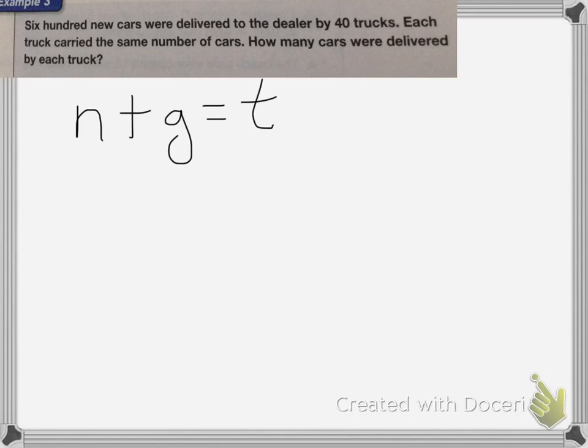So my number of groups is the 40 trucks. 40 trucks, because those are holding how many are in each. It's going to be 40 trucks plus the number in each group. I have no idea how many are in each truck, which equals my total of 600.